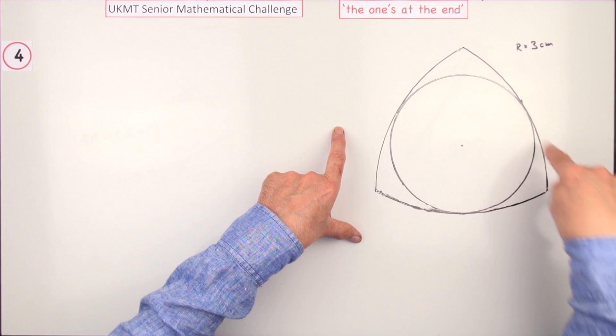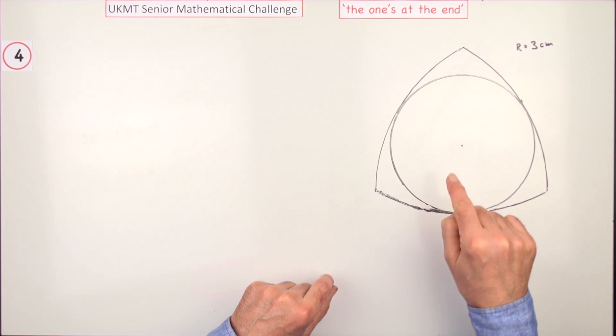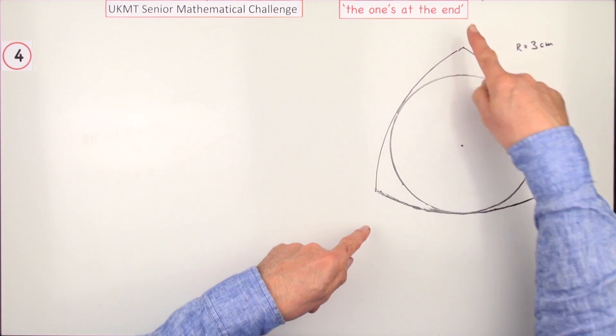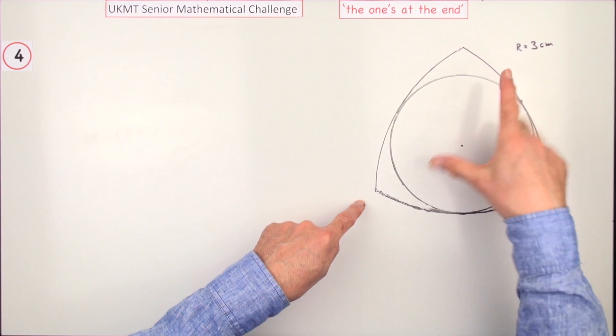This Reuleaux triangle might look a bit complicated at first, but it actually has a very simple solution. It's composed of three equal arcs of radius 3 centimeters.